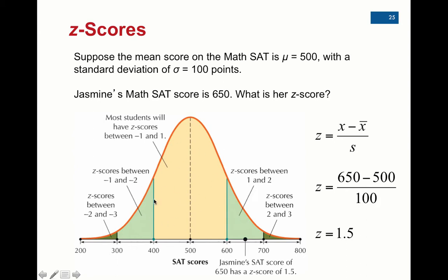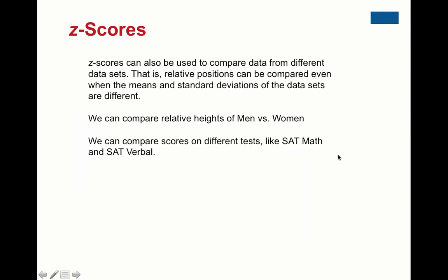A z-score can be negative if it's below the mean, positive if above the mean, or zero if equal to the mean. The other useful thing about z-scores is that we can use them to compare different data sets - relative positions can be compared even when the means and standard deviations of the data sets are different. For instance, I can compute the z-score for my height as a man, and a woman can compute a z-score for her height relative to women's heights. Even though she may be shorter than me, she may be relatively taller for women than I am relatively tall for men.